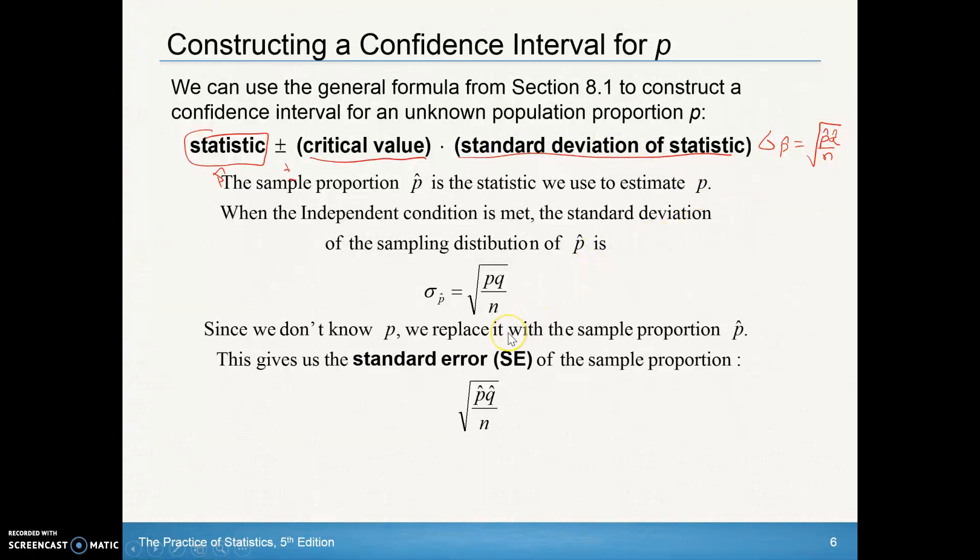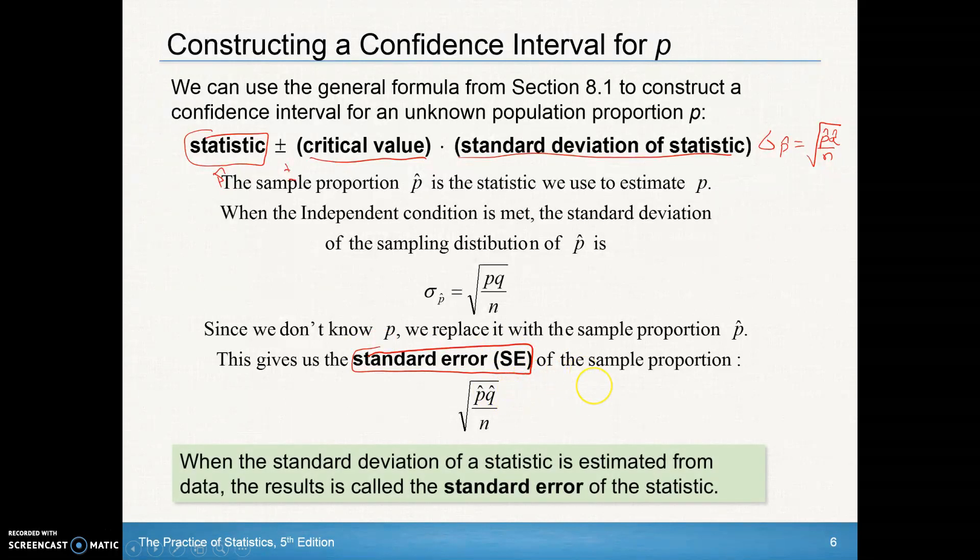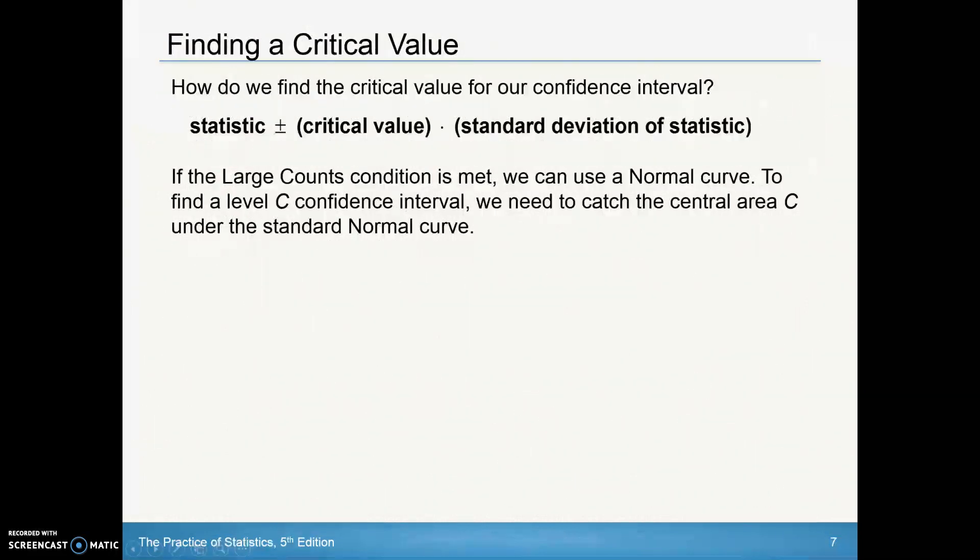The sample proportion p hat is the statistic we use to estimate p. When the independent condition is met, we can use this. But since we don't know p, we should officially call this standard error when we use the p hat and the q hat, because we use statistics here, not the standard deviation.